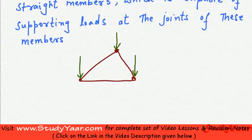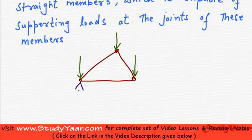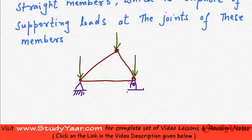If we were to support the truss, let us say on a knife edge support and on a hinge over here, this is what a truss is going to look like. Now let us analyze a particular member of this truss — let us analyze this member.